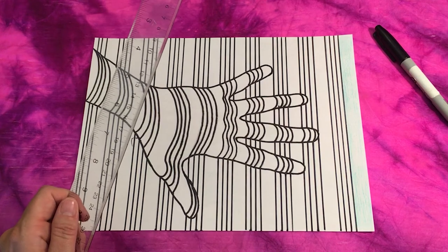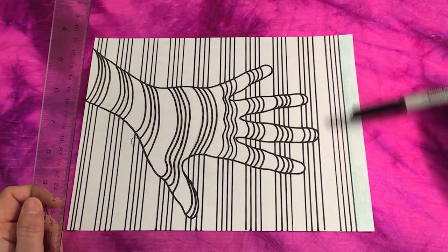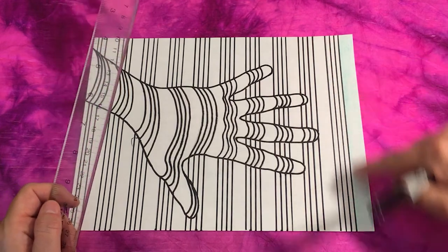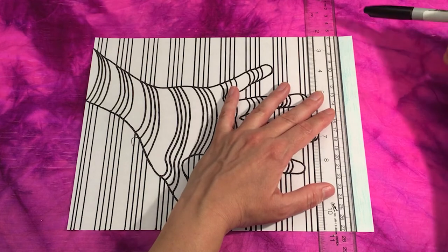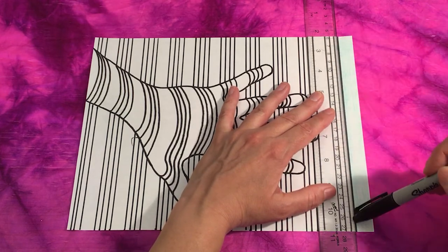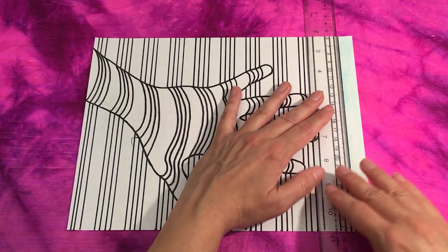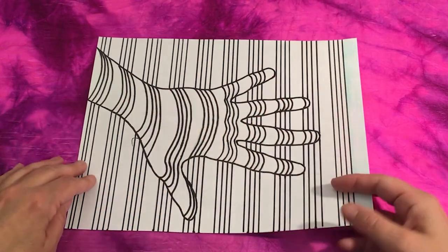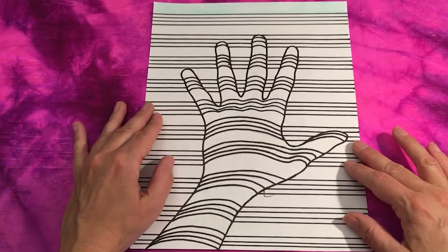Alright, as you can see, I've finished tracing all of my pencil lines with my black marker and for the straight lines, I did use my ruler to line them up and then to use my marker and trace a nice straight line over top of my pencil lines with my black marker. Alright, so now we can turn our sheet of paper upright again so that we're looking at the hand straight on.